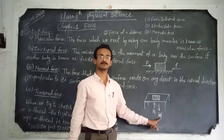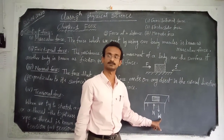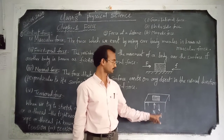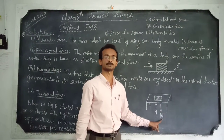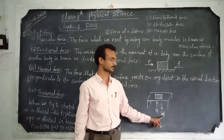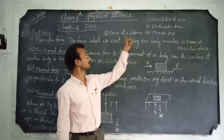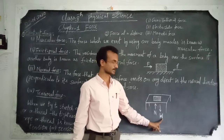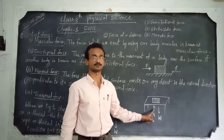Weight is nothing but a force with which the earth pulls the object towards the downward direction — that is called weight. Gravitational force comes under the second kind of force, which is force at a distance. This is what we have covered about normal force.